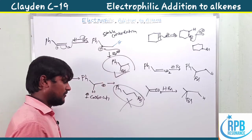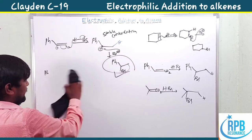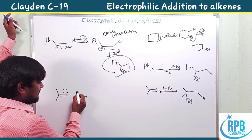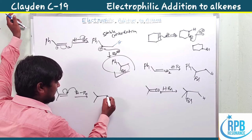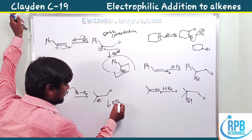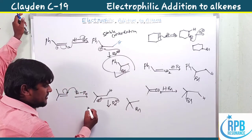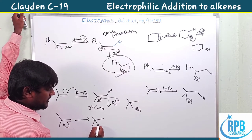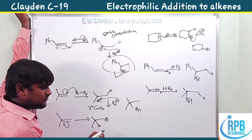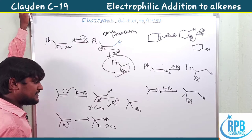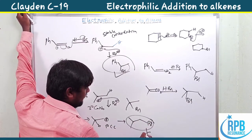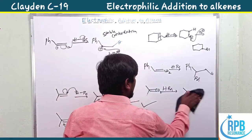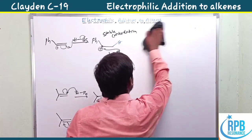Now for the second example — isopropenylbenzene. With HBr, if the negative charge reacts and H attacks the terminal carbon, we get a tertiary carbocation, which is more stable. In the alternative pathway, a primary carbocation forms, which is less stable. Therefore the product via tertiary carbocation is obtained, and the primary carbocation pathway is not favored. This demonstrates regioselectivity.